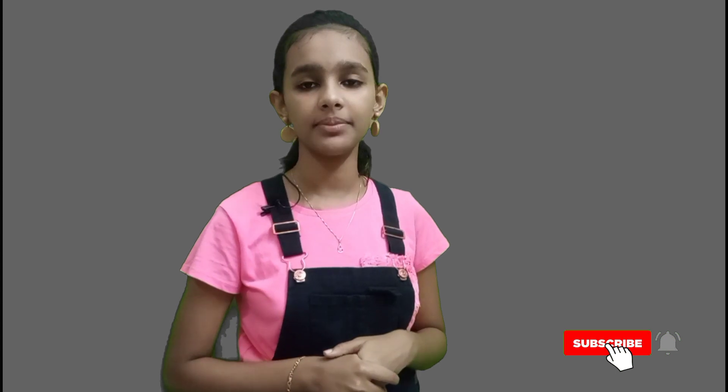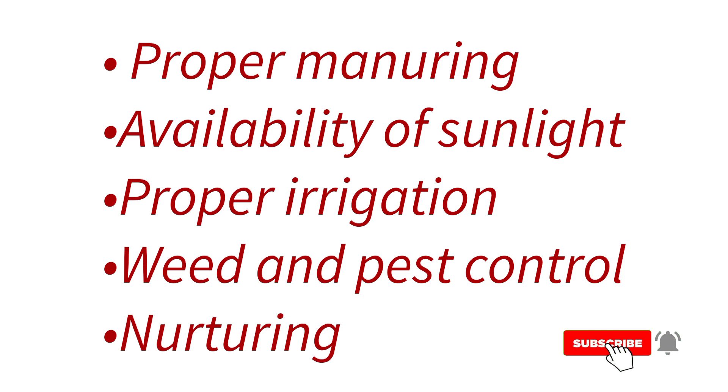Are there any other factors to be considered? Yes, here are some examples: proper manuring, availability of sunlight, proper irrigation, weed and pest control, and nurturing. What do we mean by proper manuring? We must put fertilizers for a plant to grow well, like cow dung and urine.